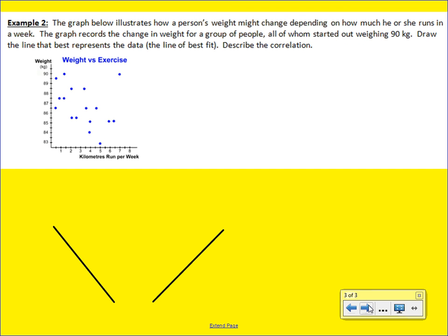All right. In our last example, now we're actually going to be looking at a scatter plot and just talk about how you would draw the line of best fit. So the graph below is showing how a person's weight might change depending on how much he or she runs during the week. And you'll notice that the weight is in kilograms, not pounds.